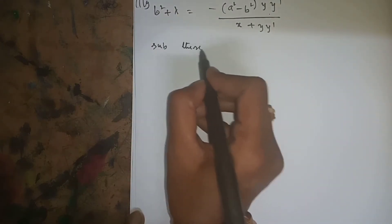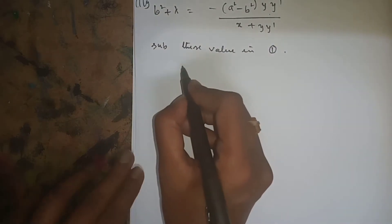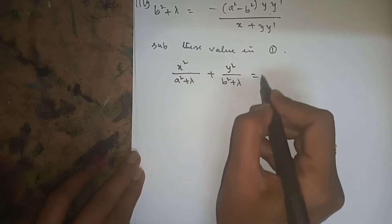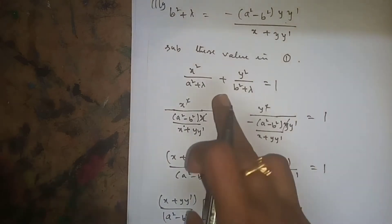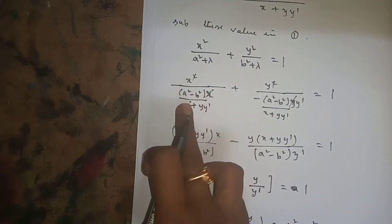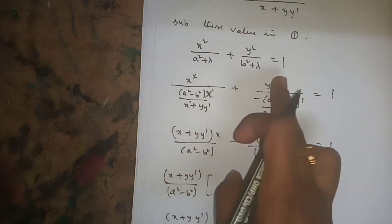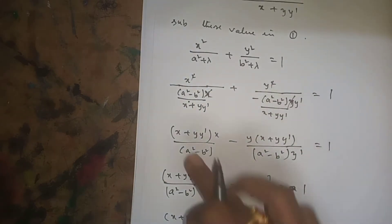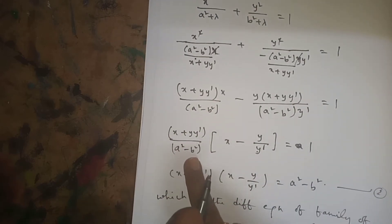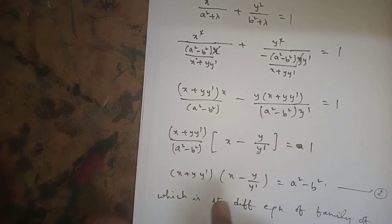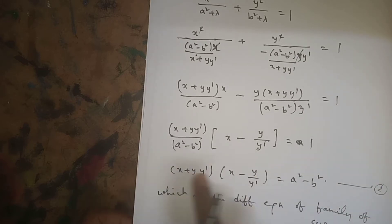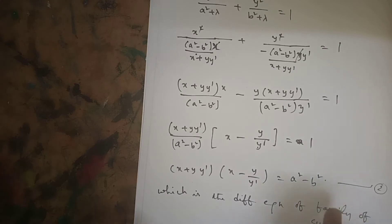Substituting these values of a²+λ and b²+λ into equation 1: x²/(a²+λ) + y²/(b²+λ) = 1. After substitution, x and y cancel appropriately. Taking common factors (x + y·y')/(a²+b²) and (x - y/y'), we get the result equal to 1.